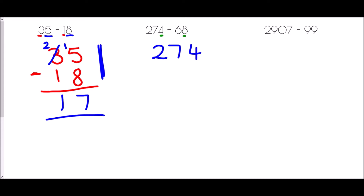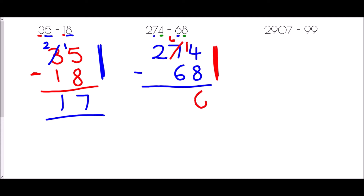For 274 take away 68: units are 4 and 8, so 8 must be underneath 4; tens are 7 and 6 and they line up. Starting from the right: 4 take away 8 would be negative, so I borrow from the tens column — that becomes 6 — and now I have 14. 14 take away 8 is 6. Next, 6 take away 6 is 0. Finally, 2 take away 0 (since 68 has 0 hundreds) is 2. So 274 take away 68 is 206.